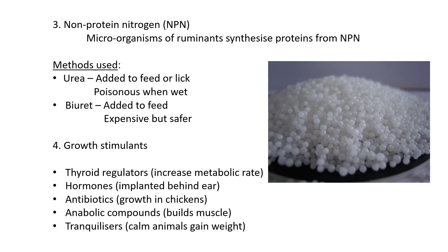For growth stimulants, thyroid regulators are injected into the animal to increase metabolic rate — a quicker metabolic rate means faster digestion and faster growth. Hormones are also used as growth stimulants and are usually implanted behind the ear for slow release, which is the safest approach to avoid harming the animal.